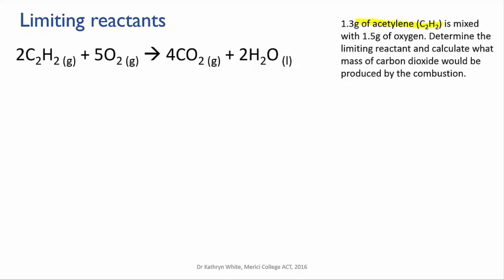So say we're going to combust 1.3 grams of acetylene with 1.5 grams of oxygen. Determine which is the limiting reactant and then calculate what mass of carbon dioxide would be produced.